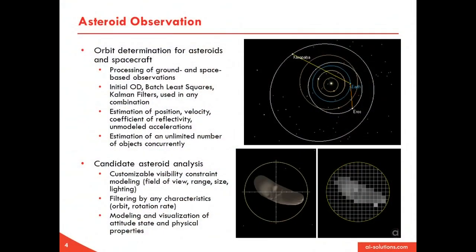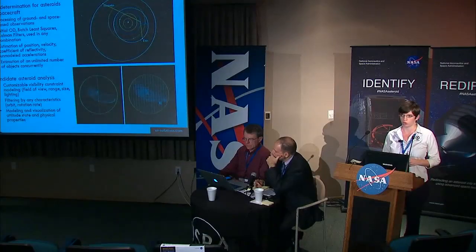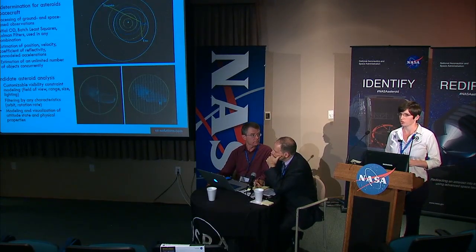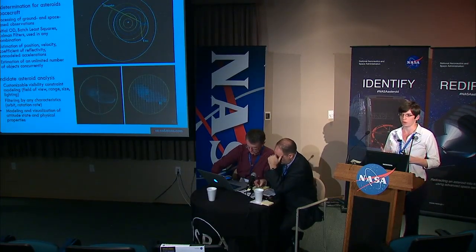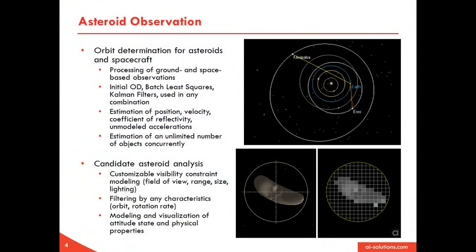For asteroid observation in particular, FreeFlyer has the ability to process ground and space-based observations in order to perform orbit determination. You can implement anything from an initial orbit determination to batch least squares, and there are also two different formulations of a Kalman filter — those can be used in any combination. With each estimation process, you can estimate position, velocity, coefficient of reflectivity, and any accelerations not already modeled in your force model. You can estimate an unlimited number of objects concurrently — whether one spacecraft or asteroid, or ten or a hundred or a thousand — there's no limit in our software.